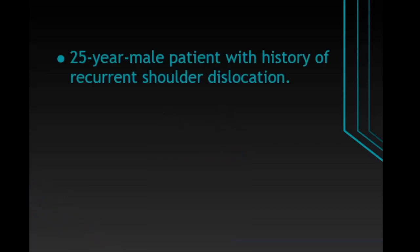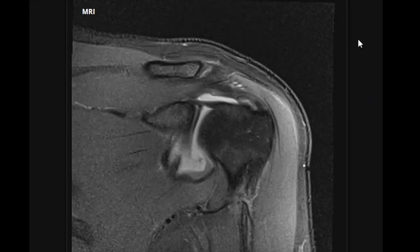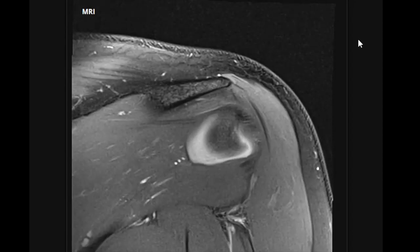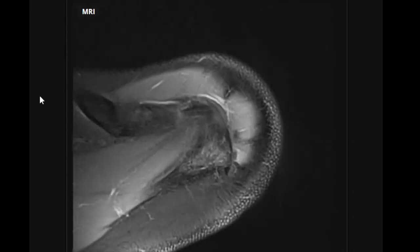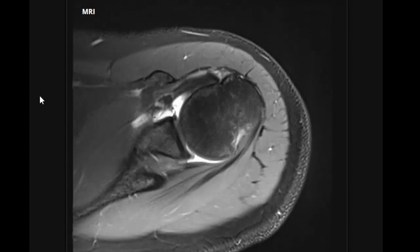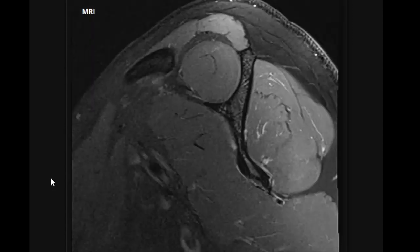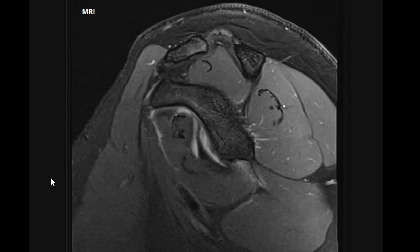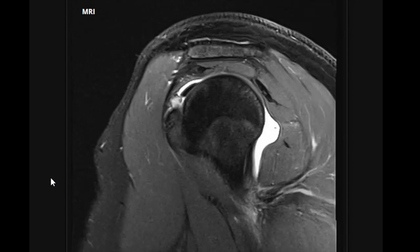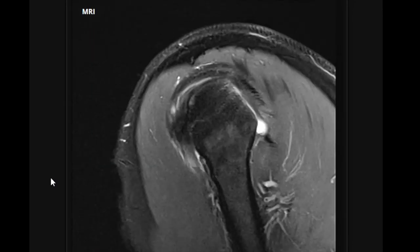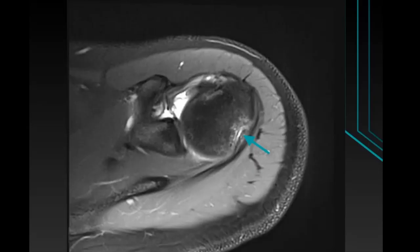Starting with case number one, an MRI was performed for a 25-year-old male patient with history of recurrent shoulder dislocation. On axial PD fat sat imaging, there is a compression fracture involving the posterior lateral aspect of the head of humerus with surrounding marrow edema at the level of the coracoid process, consistent with a Hill-Sachs lesion.